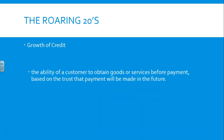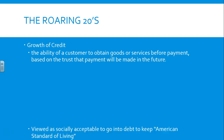Additionally, we're going to see the growth of credit, defined as the ability of a customer to obtain goods or services before payment, based on the trust that payment will be made in the future. You state you're going to pay for it later, with interest. Producers like this because they make more money; consumers like it because they get stuff they couldn't previously afford. At this time, it's viewed as socially acceptable to go into debt to maintain the American standard of living — if your neighbors have an automobile or a washing machine and you can't afford one, you take it on credit.